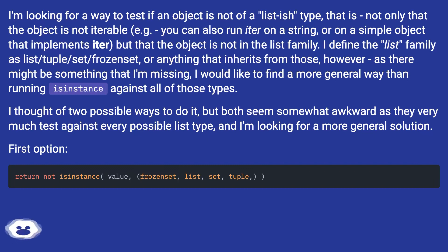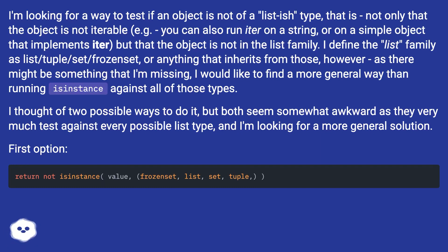I define the list family as list, tuple, set, frozenset, or anything that inherits from those. However, as there might be something that I'm missing, I would like to find a more general way than running isinstance against all of those types. I thought of two possible ways to do it, but both seem somewhat awkward as they very much test against every possible list type, and I'm looking for a more general solution.